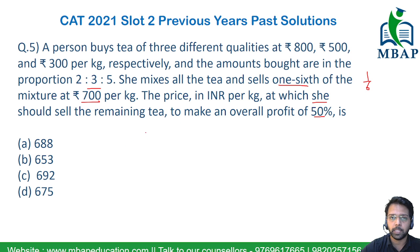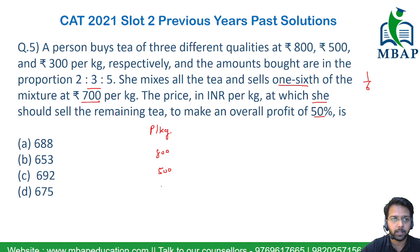Let's look at the prices of the different varieties of tea. Prices per kg are given in three forms: 800 rupees per kg, then 500, and lastly 300. The amounts are also given in the ratio of 2:3:5, so we can assume them to be 2x, 3x, and 5x.